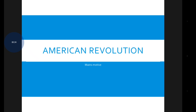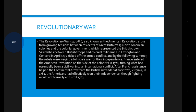Let's begin our topic. The Revolutionary War, also called the American Revolution, during 1775 to 1783, arose from growing tensions between the residents of Great Britain's 13 North American colonies and the colonial government which represented the British Crown. Skirmishes between the British troops and the colonial militiamen in Lexington and Concord in April 1775 marked the start of the armed conflict.